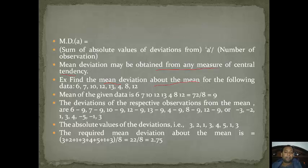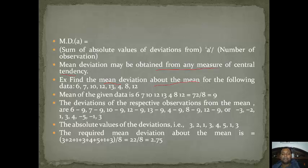For mean deviation about the mean, suppose this data is given. First we calculate the arithmetic mean by adding all values and dividing by the number of observations, which gives mean = 72/8 = 9. After finding the mean, we subtract each data value from 9: for example 6−9, 7−9, 10−9, 12−9, 13−9 and so on, giving deviations −3, −2, 1, 3, 4, 5, −1, 3. We take absolute values and add: 3+2+1+3+4+5+1+3 = 22. Dividing by 8 observations gives mean deviation = 22/8 = 2.75.